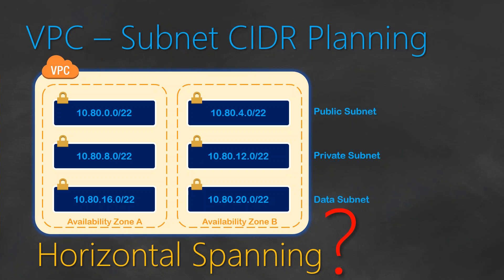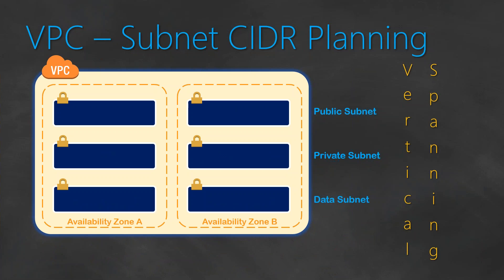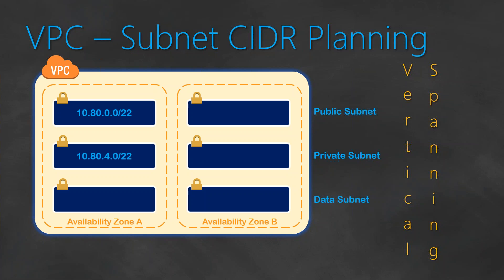Now let us talk about vertical spanning. In vertical spanning, you complete all three subnets for availability zone A first. So you start with the public subnet at 10.0.0.0/22 — 1024 IP addresses — then go directly to the private subnet in availability zone A, and finally to the data subnet in availability zone A. Then you complete all subnets in availability zone B in the same vertical manner.